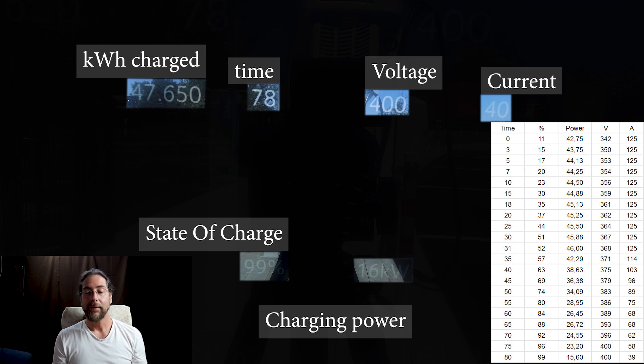At 98 it goes down to 15, 16 kilowatt. Almost 80 minutes, this is where I stopped at 48 kilowatt hours charged, 400 volt, only 40 amp. I think that's pretty good. With the 125 amp limit you can charge at a normal triple charger because they are limited to 125 amps as well.